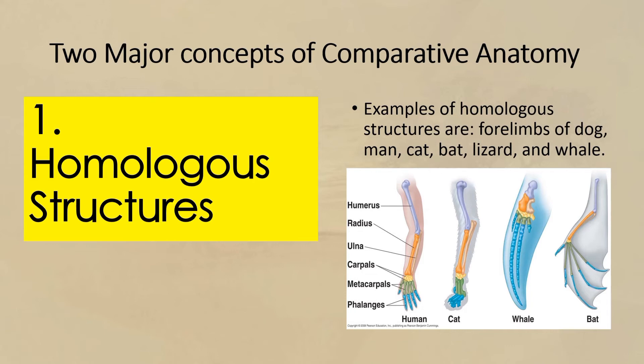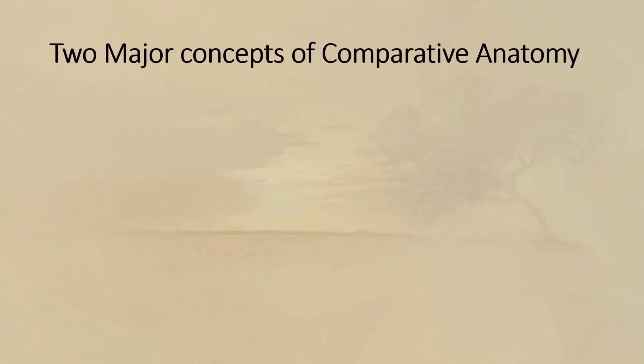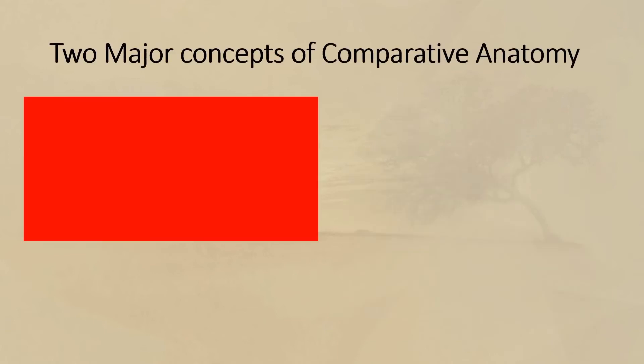Divergent evolution is the splitting of an ancestral population into two or more sub-populations that are geographically isolated from one another.